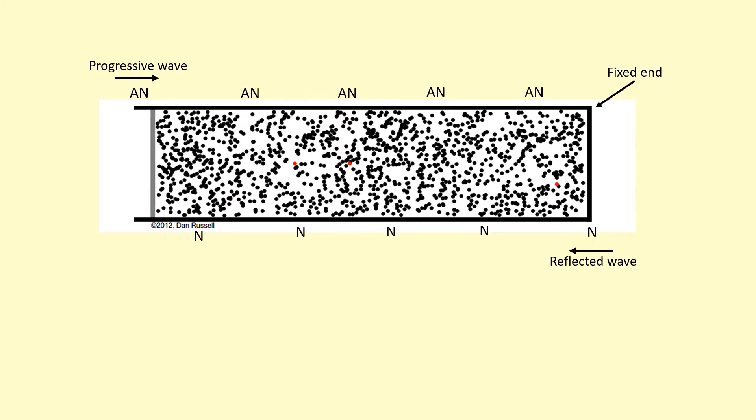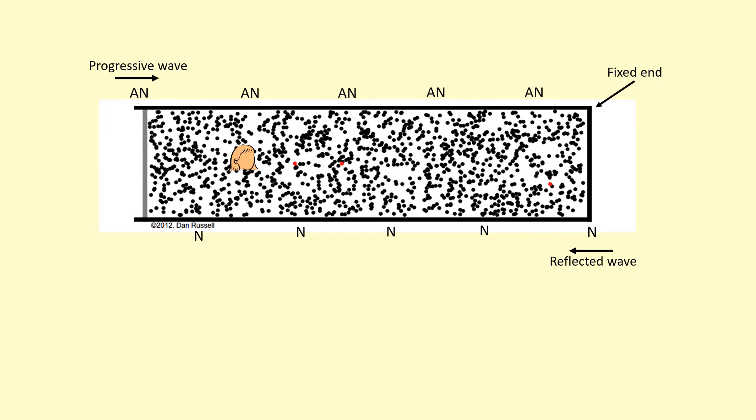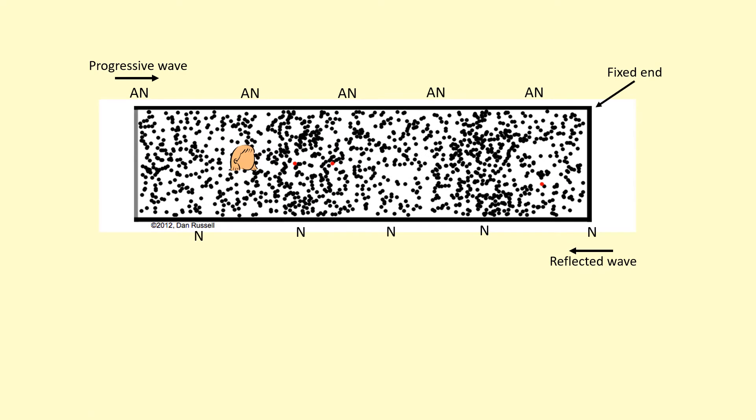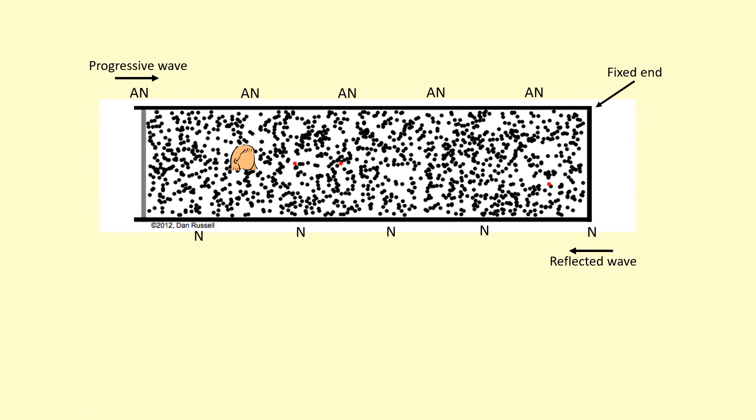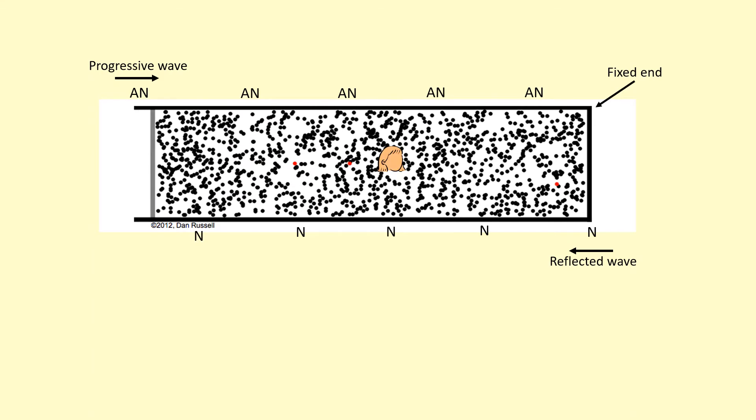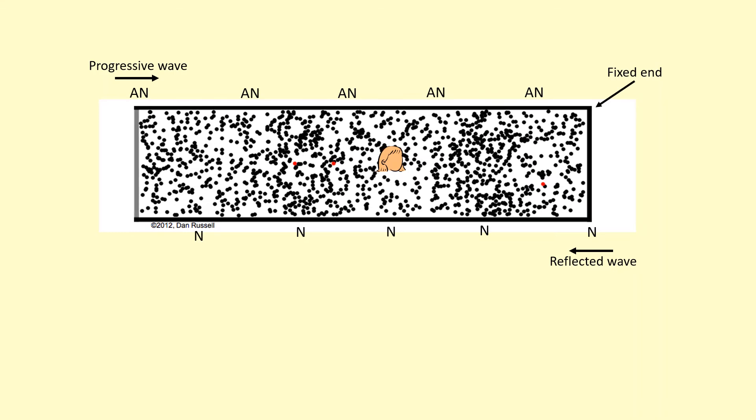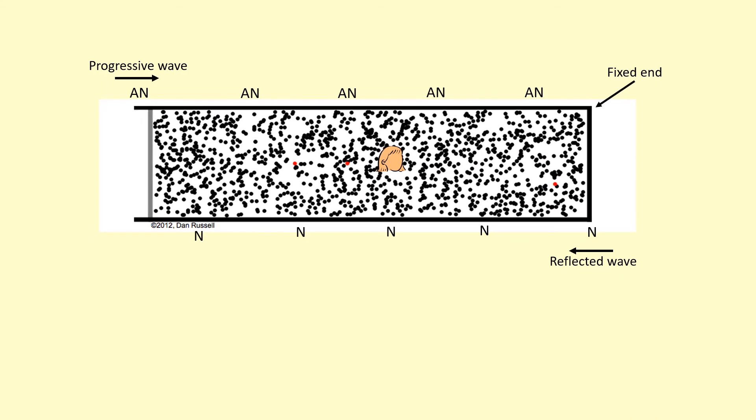And then you've got the antinodes where the particles are oscillating with the largest amplitude. Let's say you're a person walking along in this tube. If you were standing at the antinode, you hear a very loud sound. You can hear large amplitude oscillations. While at the nodes, if you're standing on the nodes, you wouldn't hear anything because the particles there aren't vibrating. So there would be no sound there.